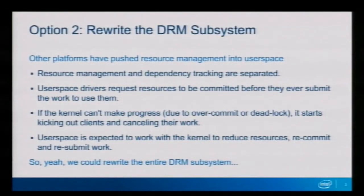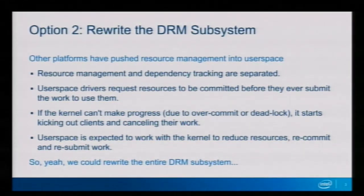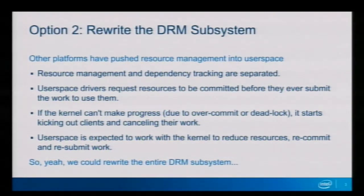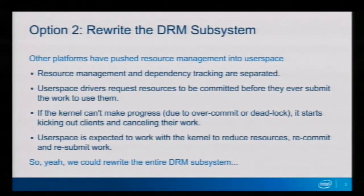Option two is to rewrite the DRM subsystem. Another suggestion is that we could follow certain other APIs and separate resource management from synchronization, pushing a lot of resource management off onto the client. User space drivers would request that certain resources be made resident, then submit their batch. If the kernel has evicted something, it rejects the submission and tells them to make things resident and try again. If submissions deadlock and the kernel can't make progress, it rejects the whole lot and user space tries again. This can work — other platforms do this successfully. But it involves entirely rewriting the DRM subsystem, so it's not a good short-term option.